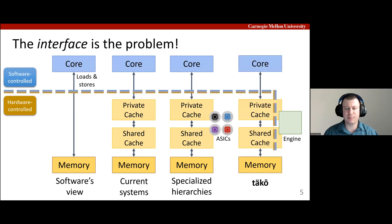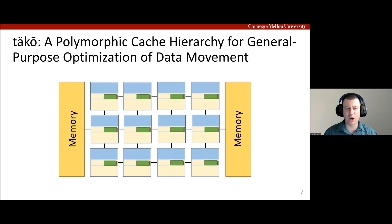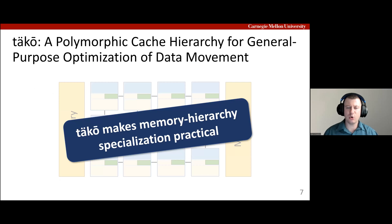The thesis behind our system is that the increasing importance of data movement motivates an increasing need to expose data movement to software, so optimizations that previously required specialized hardware can now run entirely in software on a single general-purpose platform. TACO achieves this by adding general-purpose engines that run software within the hierarchy, eliminating the need for new hardware for each new optimization. We call this a polymorphic cache hierarchy because it lets software change the functionality of the hierarchy to match the application's needs.